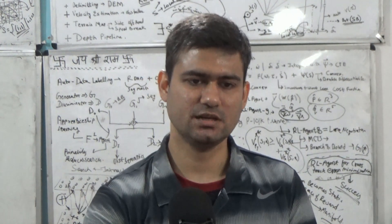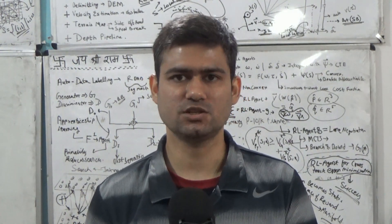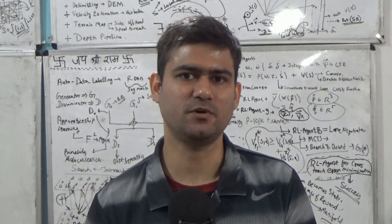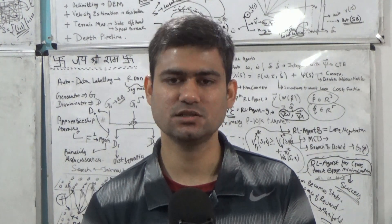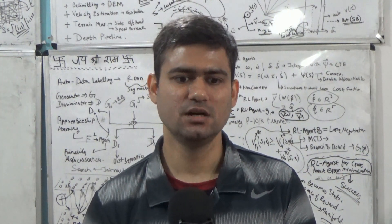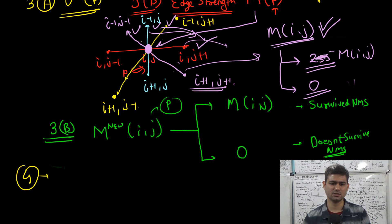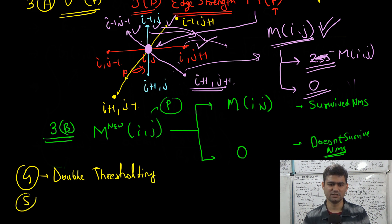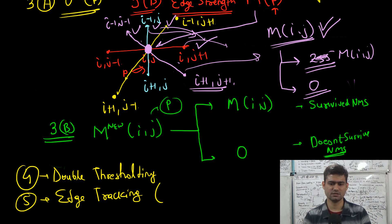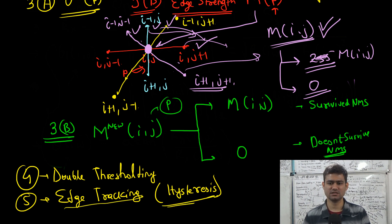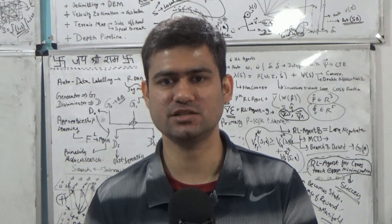This covers the NMS algorithm — the non-maximal suppression algorithm — in the context of filtering out false positive edge points. Now we will discuss two additional steps in the Canny edge detection algorithm: step 4 is double thresholding, and the final step is edge tracking via hysteresis. Next we will discuss these two steps, which will complete the Canny edge detection algorithm.